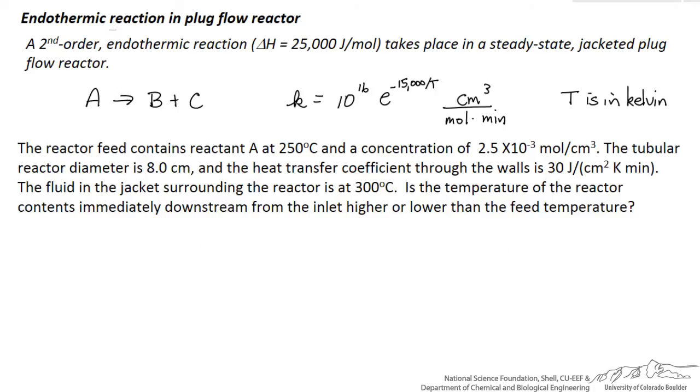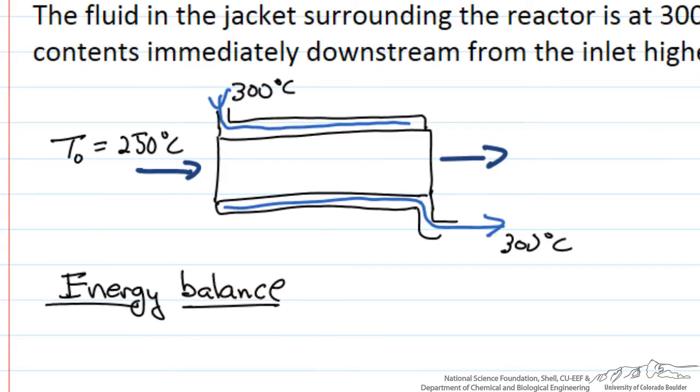So what we want to do is write down the energy balance for this system. And it is always good to draw a diagram first. So drawing a diagram where a schematically represented jacket where the blue corresponds to the steam that is coming in. So we are at constant temperature as it condenses, flows around the outside of the tube and exits at the same temperature.